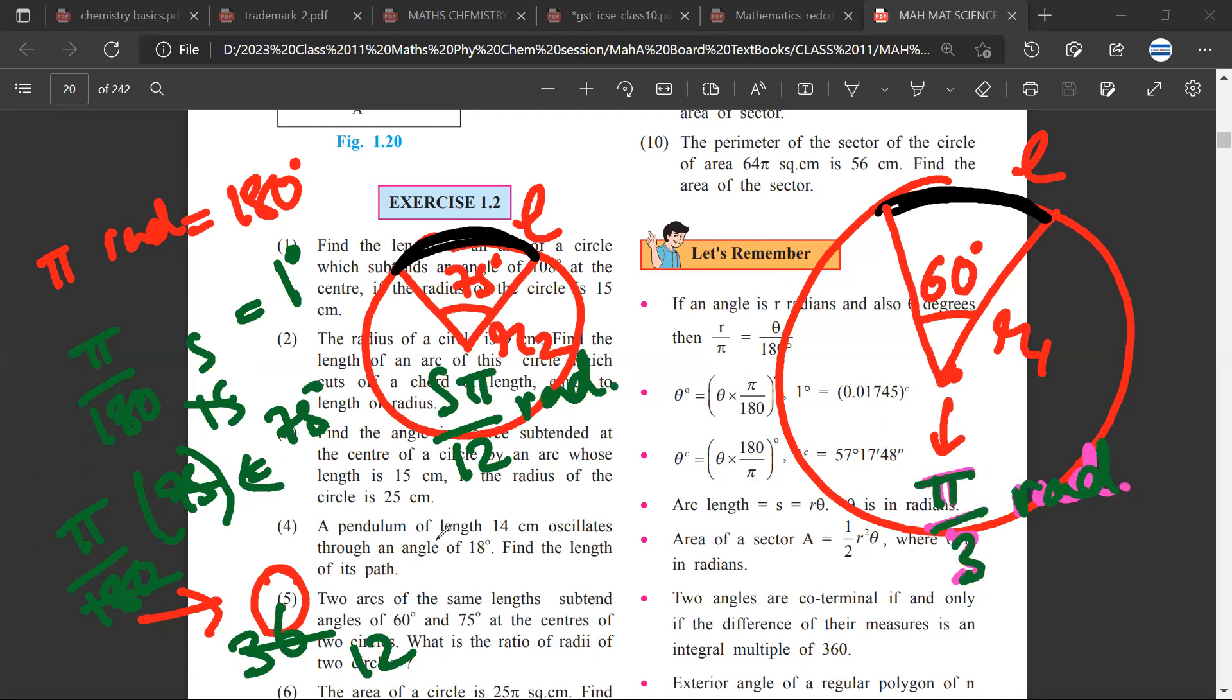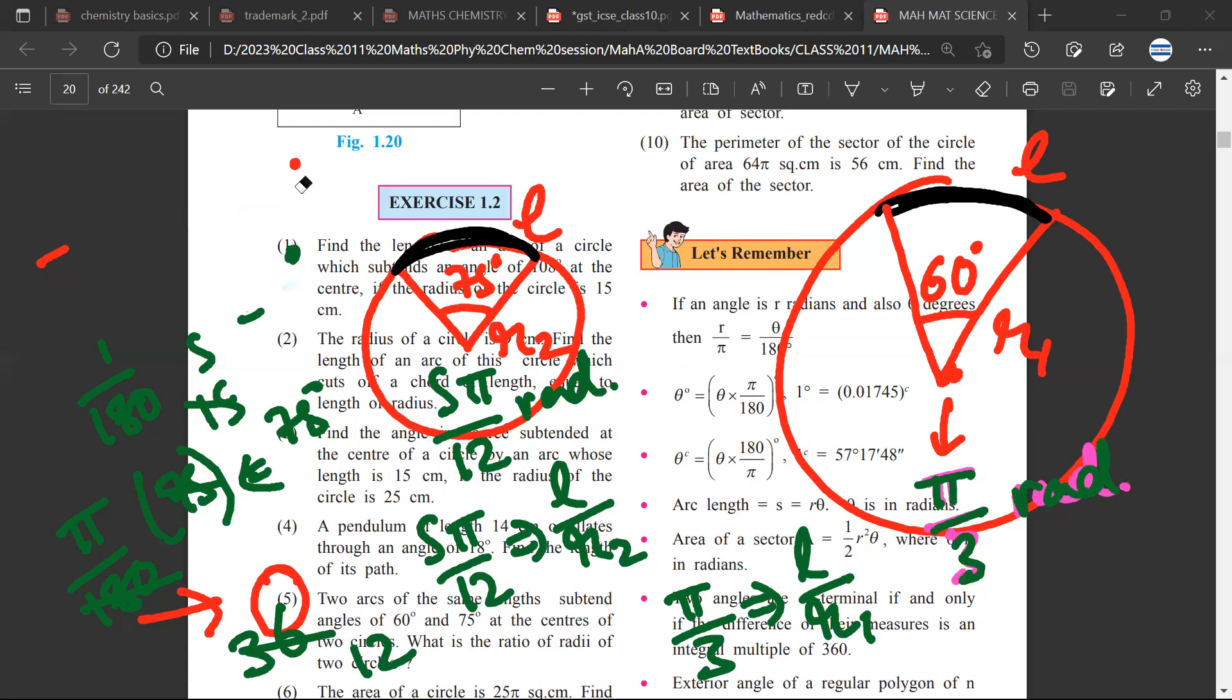Now here 5π/12 is equal to l by r2. Here π/3 is equal to l by r1. Are we clear till here?